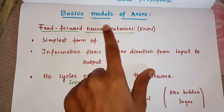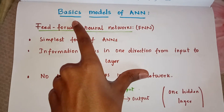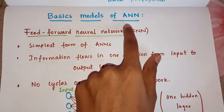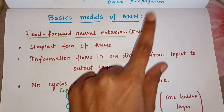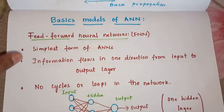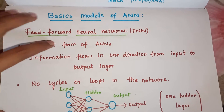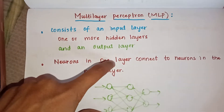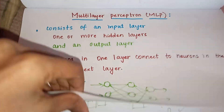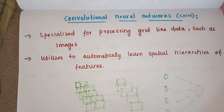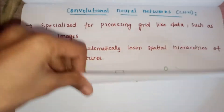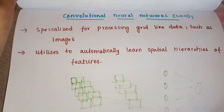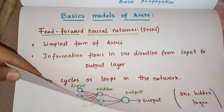Hello everyone. Today we will be learning about the basic models of ANN, which is artificial neural network. In this we have a total of 4 types: feed forward neural network, multi-layer perceptron, convolutional neural networks, and recurrent neural networks. These 4 we are going to learn.